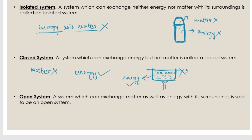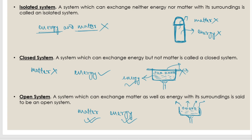Lastly, in an open system, both matter and energy can be exchanged with the surroundings. An open vessel where vapors can escape is an example — matter is exchanged with the surroundings, and energy (heat) can also flow with the surroundings. So in an open system, both matter and energy exchange with the surrounding takes place.